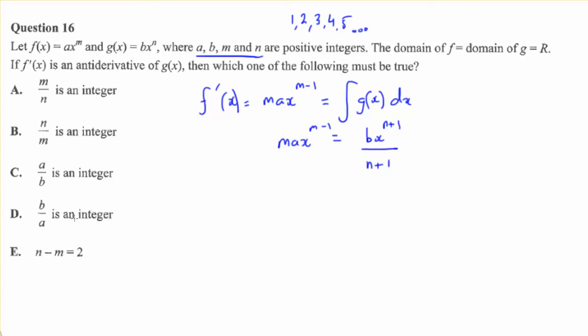So, which of these must be true? We've got a bunch of quotients here that need to come out as integers. Oh, we've got this funny answer down the bottom here, which says that n minus m equals 2. Which one of these are true?